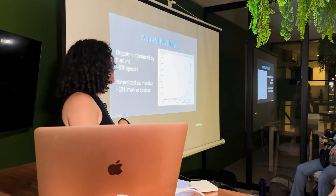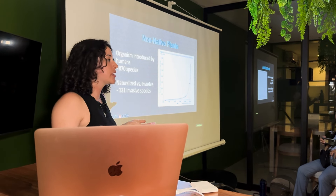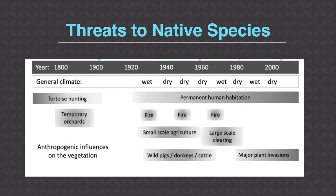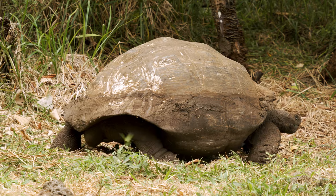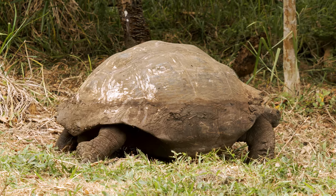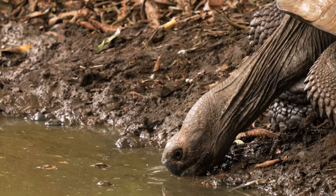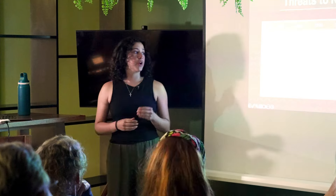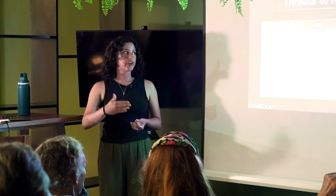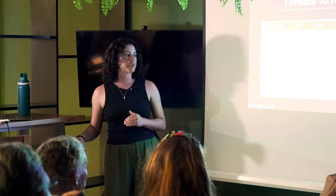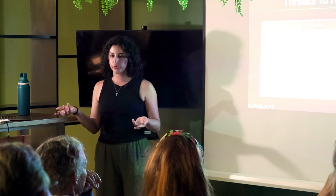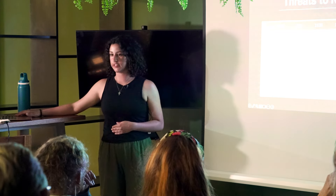As humans have come to the islands, there's been an increase in non-native plants. Threats to native species include tortoise hunting — whalers and pirates would store tortoises alive on their ships as a food source. When permanent human habitation occurred, other threats to native plants started: agriculture was introduced along with agricultural animals, and plant invasions by invasive species.